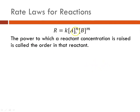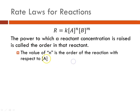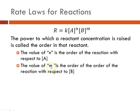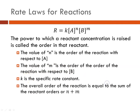In general, N and M, or the orders, are small whole numbers. It could be 0, 1, or 2. The power to which a reactant concentration is raised is called the order with respect to that reactant. The value of N is the order with respect to the concentration of A, the value of M is the order with respect to B, and K is your rate constant. The overall order of a reaction is equal to the sum of the reaction orders — N plus M. So if N was 1 and M was 2, that would be a third order reaction.